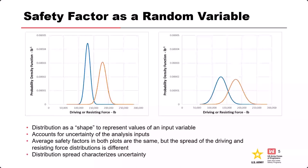In a room with subject matter experts, we'd say our best estimate for the driving force is here, with a reasonable low and a reasonable high, giving us a distribution. Over here the best estimates are the same, but the low is lower and the high is higher — a wider spread. When we use these in a risk analysis, note the difference in overlap where driving forces exceed resisting forces: with more uncertainty, that overlap is larger. That's the realistic output of understanding distributions.